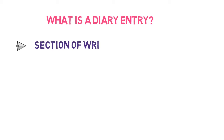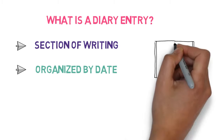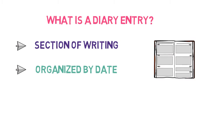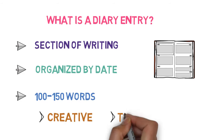Let's now understand what is a diary entry or diary writing. A diary entry is a section of writing that has been organized by date in a diary. Think of it as a chapter of a book. Generally, it can be as short or as long as you want. But for exam purposes, the word limit is set to 100 to 150 words. While writing any diary entry, you have to be more creative and more thoughtful.